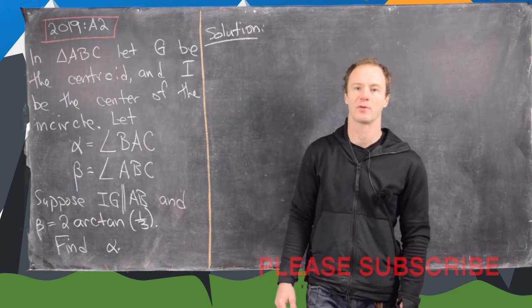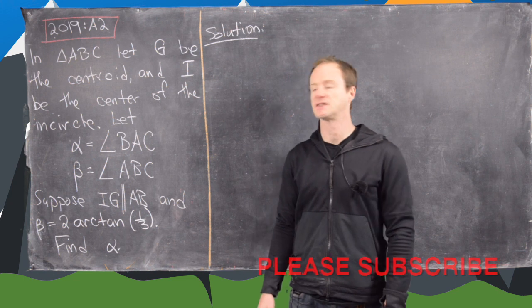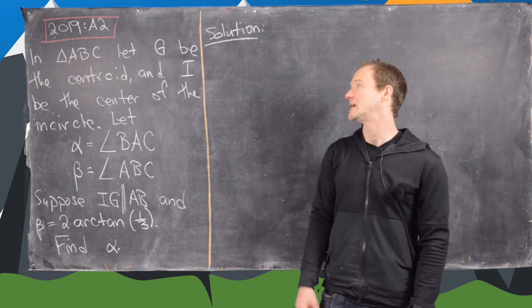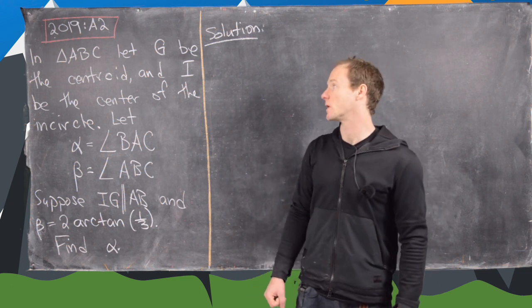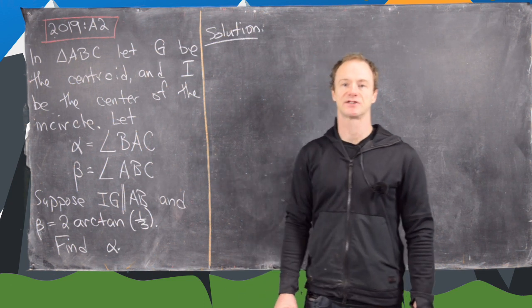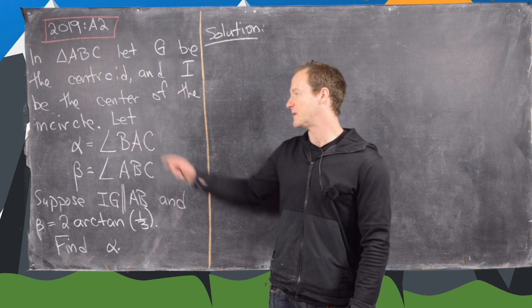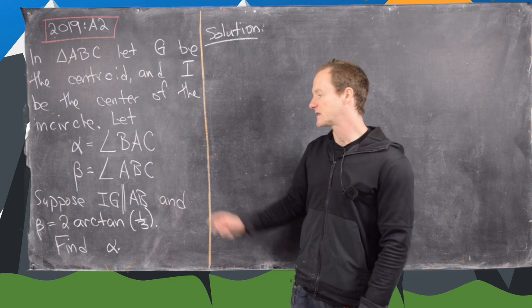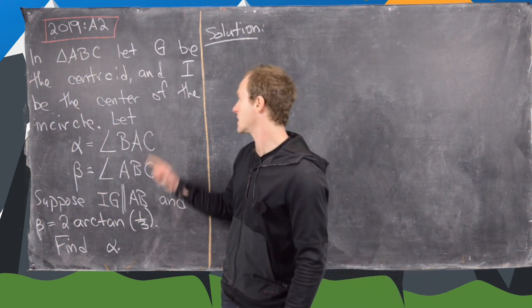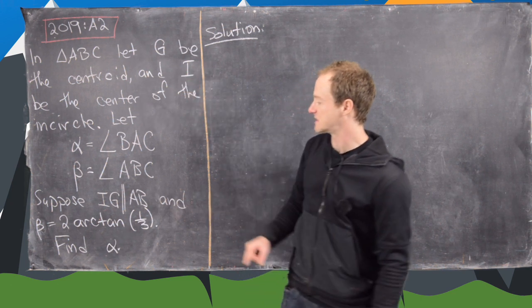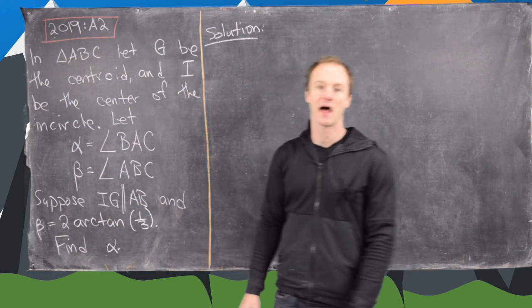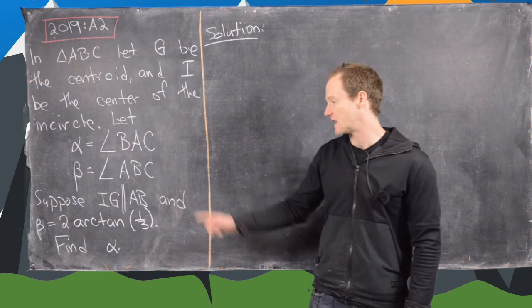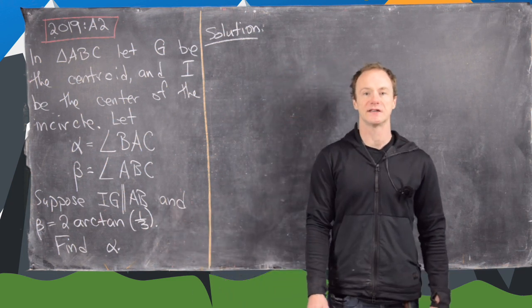In this video we're going to look at a solution to problem number A2 from the 2019 Putnam exam. In triangle ABC we let G be the centroid and I be the center of the incircle, alpha be angle BAC and beta equal angle ABC. Suppose that IG is parallel to side AB, and beta equals 2 times the inverse tangent of 1/3. Our goal is to find alpha.